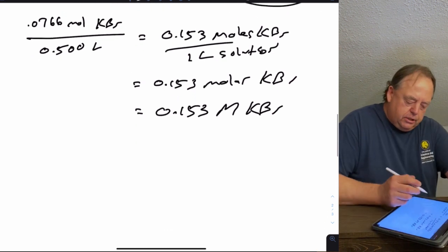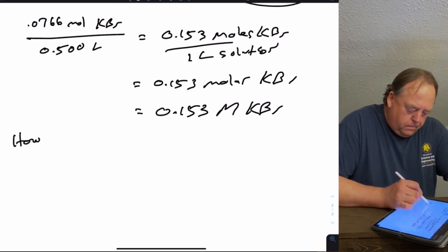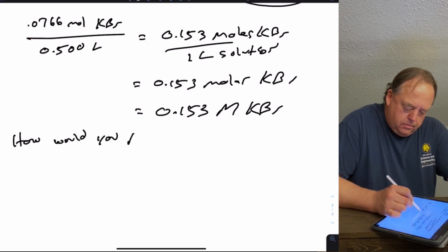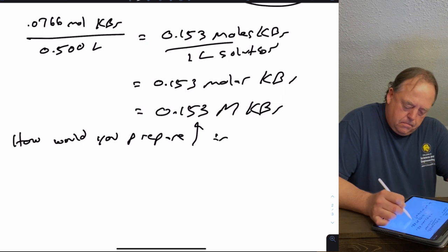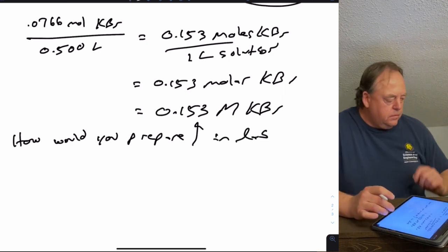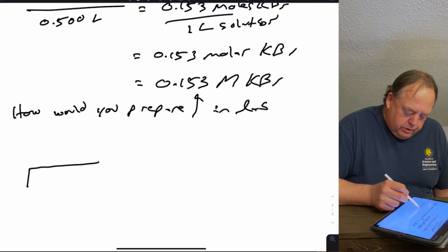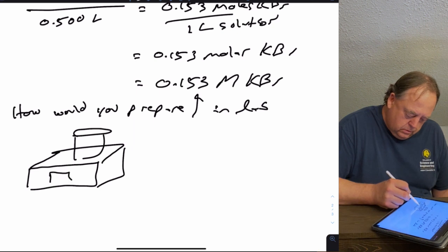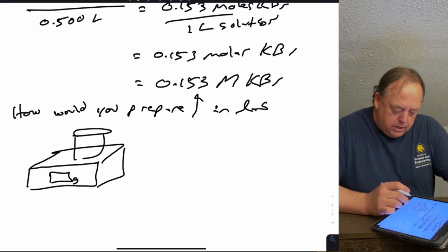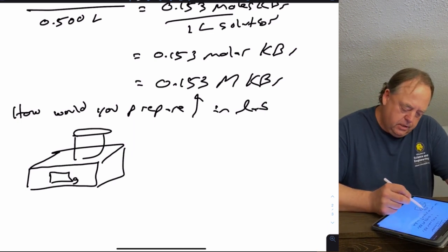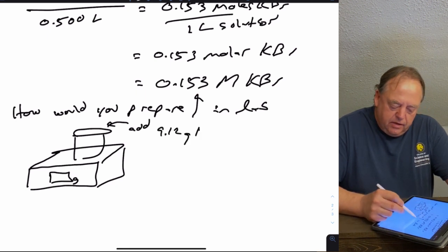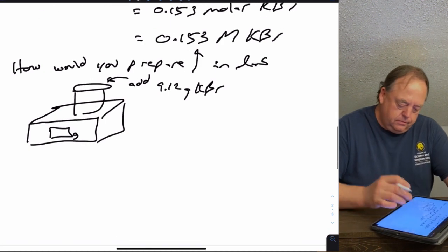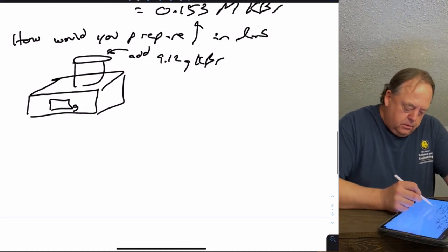How would you actually prepare this solution in the lab? You would need a balance — put a flask on the scale, tare it, zero it out, and then add 9.12 grams of KBr, weighing it out carefully.